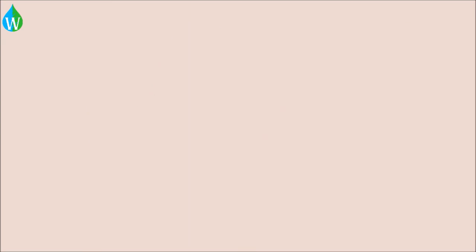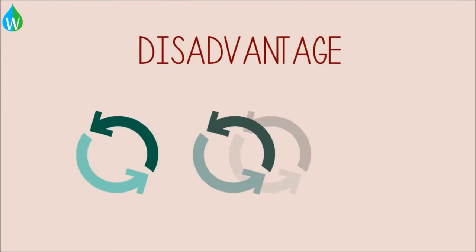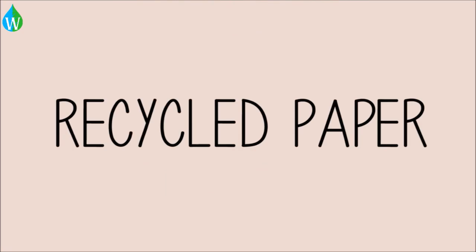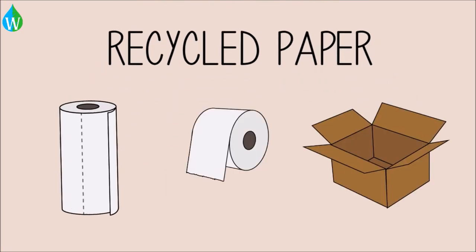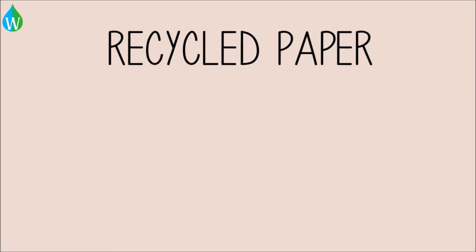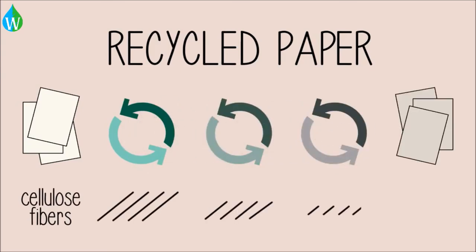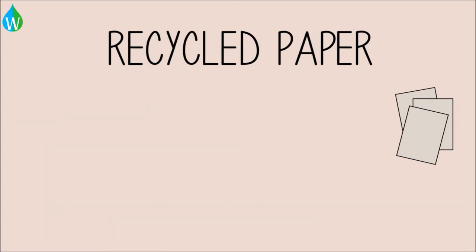The main disadvantage with recycling paper is that it can only be done a few times. Recycled paper is usually used to make kitchen rolls, toilet paper, and packaging materials. Each time a paper product is recycled, the cellulose fibers become shorter, thereby rendering the recycled paper product a little bit less useful than the original.